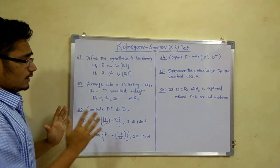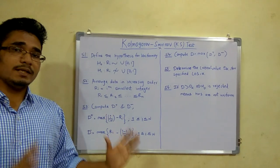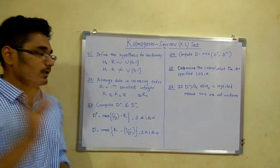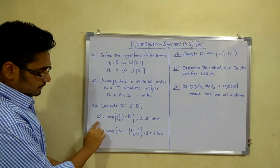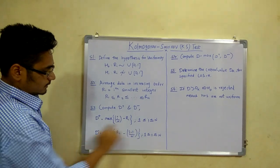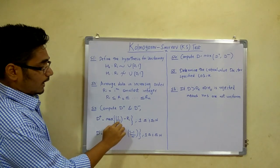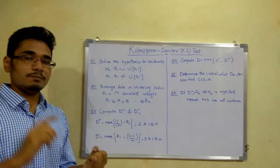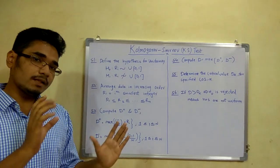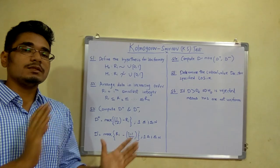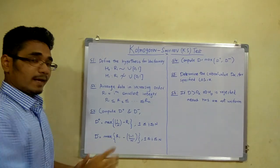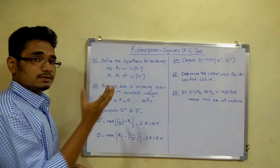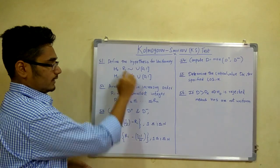Step 3 is to compute D+ and D-. D+ is a test parameter. You calculate D+ as the maximum of (i/n - Ri), where i represents the index numbers. If 5 numbers are given, i goes from 1 to 5. n is the total number of values, and Ri are the ordered random numbers.